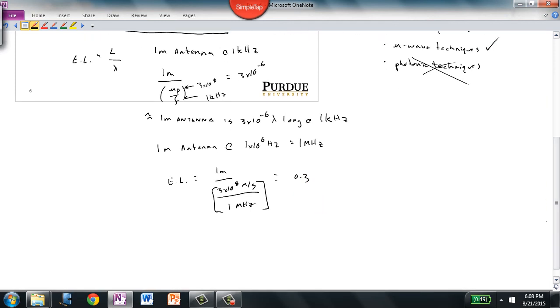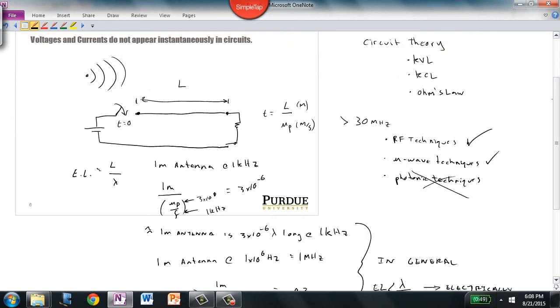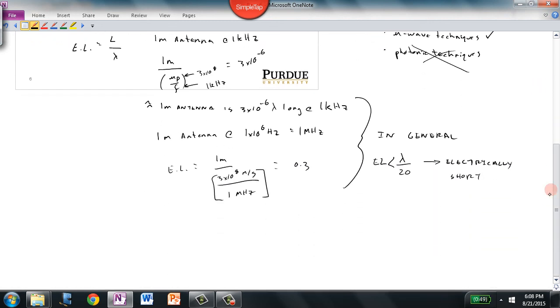What we'll find in this class is, in general—and we'll prove this over the course—if the electrical length is less than λ/20, we call that electrically short. For electrically short circuits, we use circuit theory. That's what you've done in your entire career here at Purdue so far. However, if the electrical length is greater than λ/20, we call it electrically long.